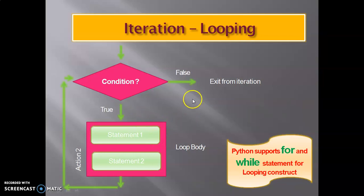If the condition will be true, then the set of statements will be executed and it will continue until the condition becomes false. If the condition is false, then it will exit from the execution. Python supports for and while statements for looping constructions. Here we will use two loops: for and while.